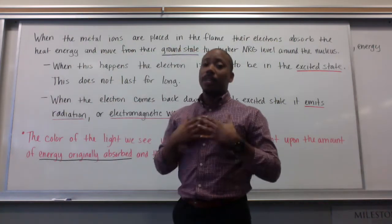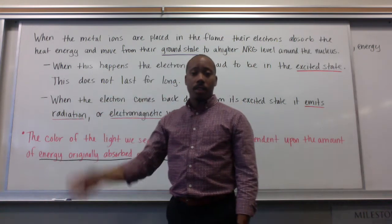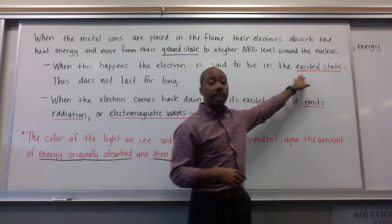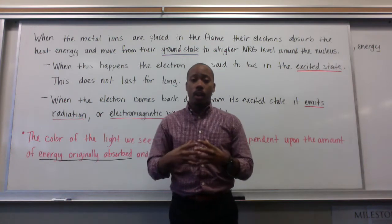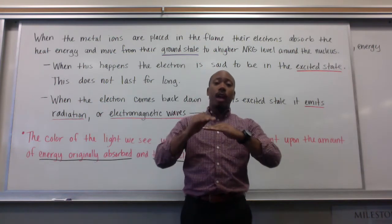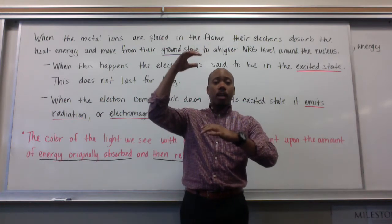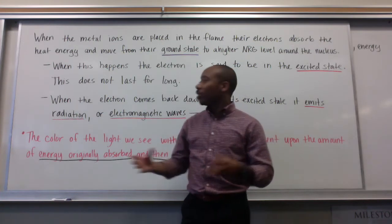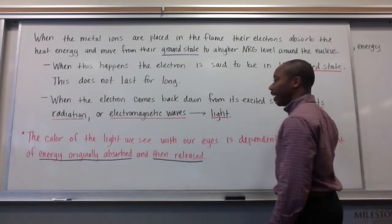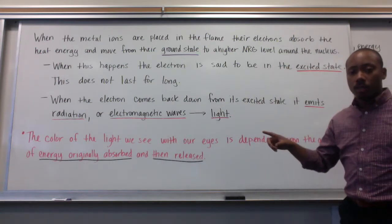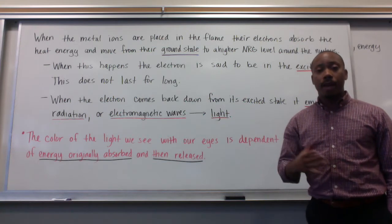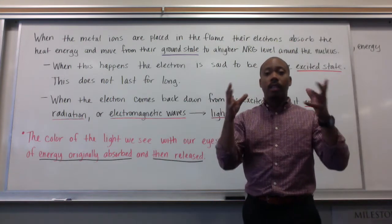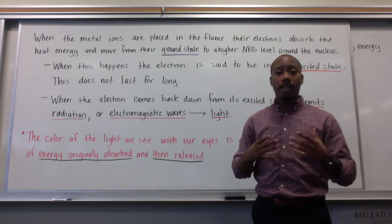Just like in reality, this does not last for long. In chemistry, things like to be stable, and the excited state is not very stable. So once an electron absorbs energy, it goes from the ground state to the excited state, but it's not very stable up there — eventually the atom is going to have to come back down. And when it does, that's when the magic happens. When the electron comes back down from its excited state, it emits radiation or electromagnetic waves that we refer to as light — it releases photons in the form of light that we see.